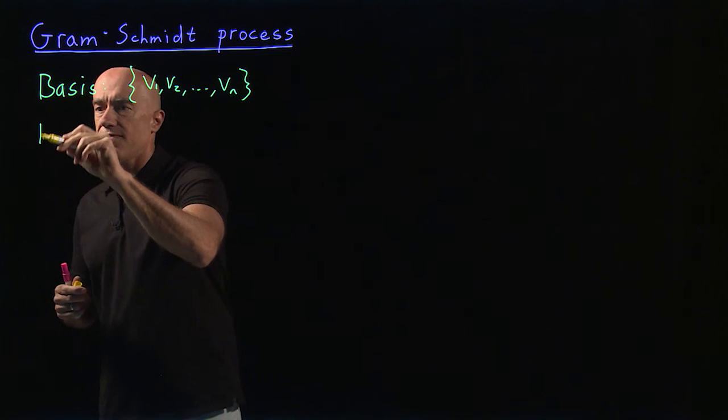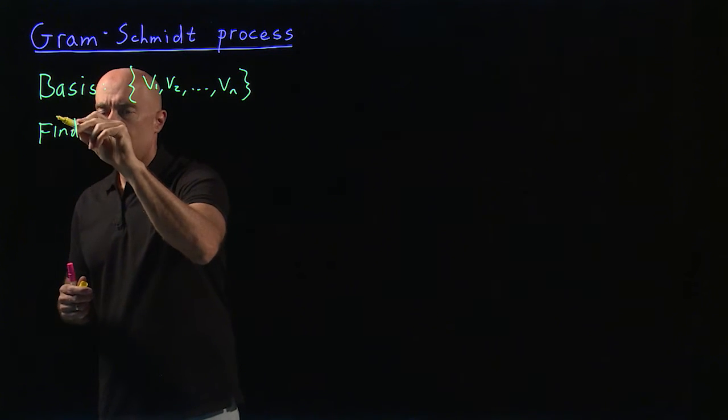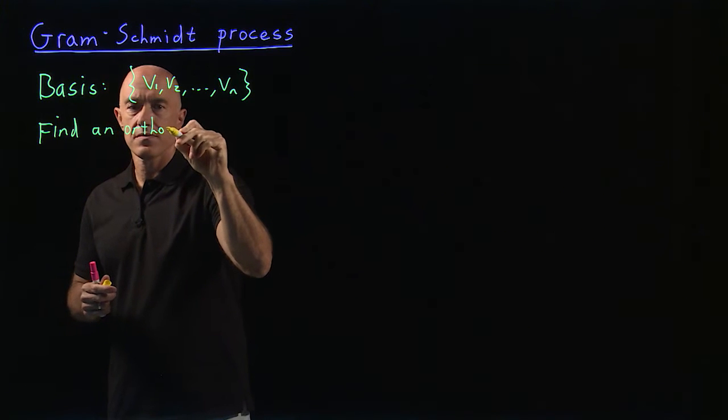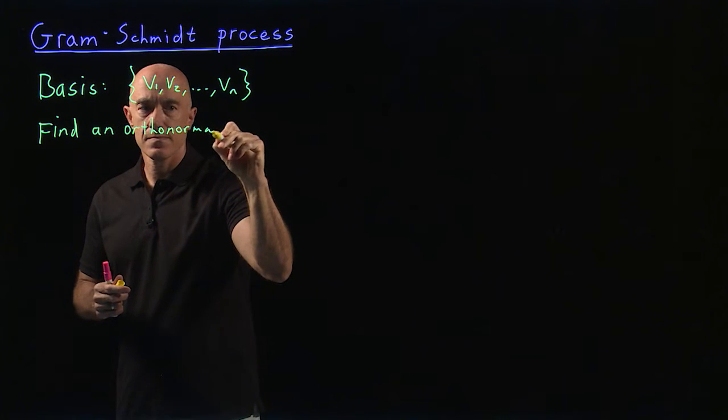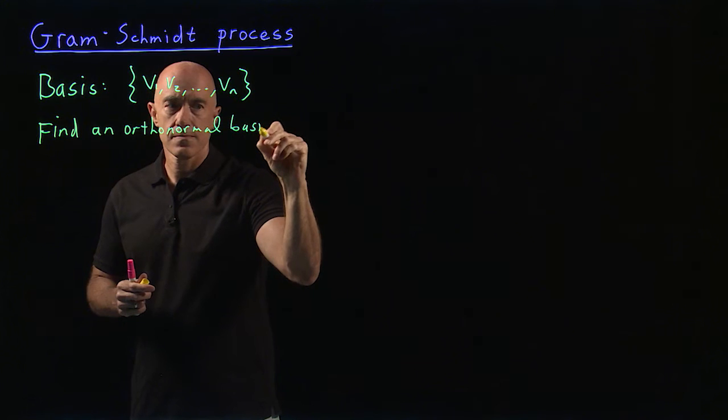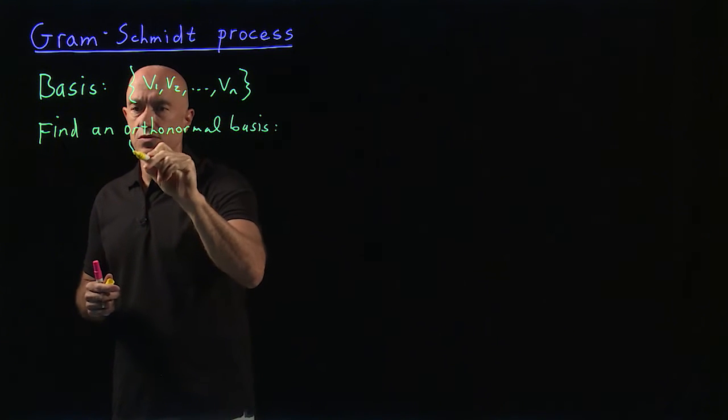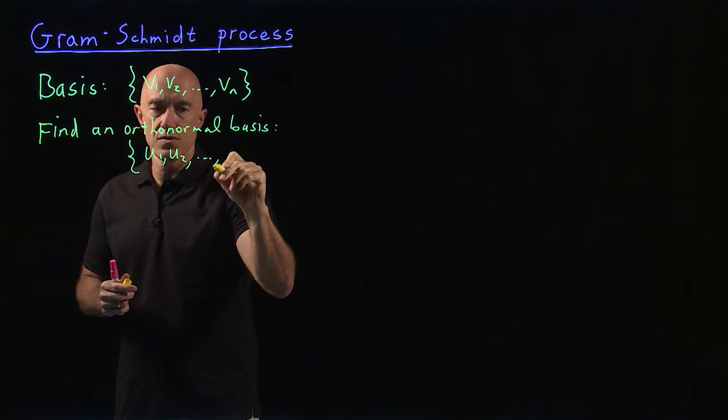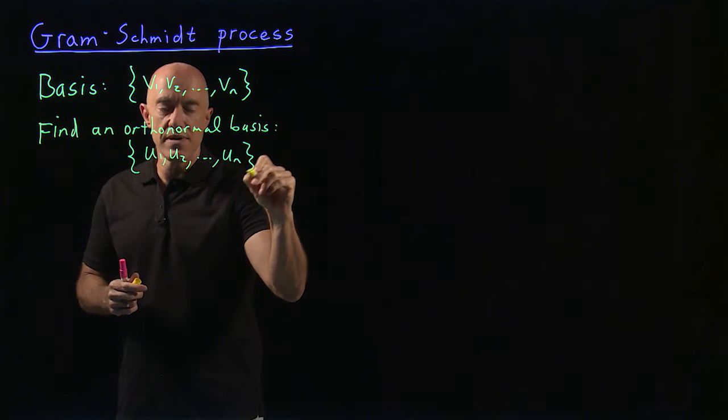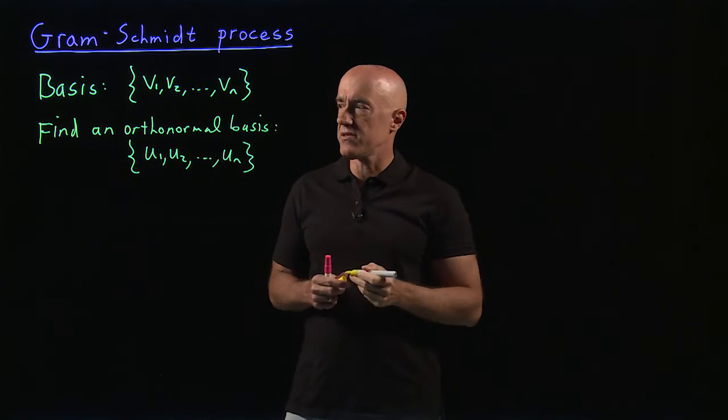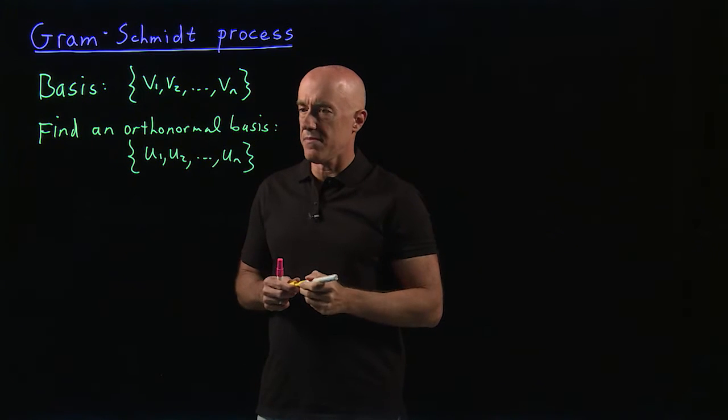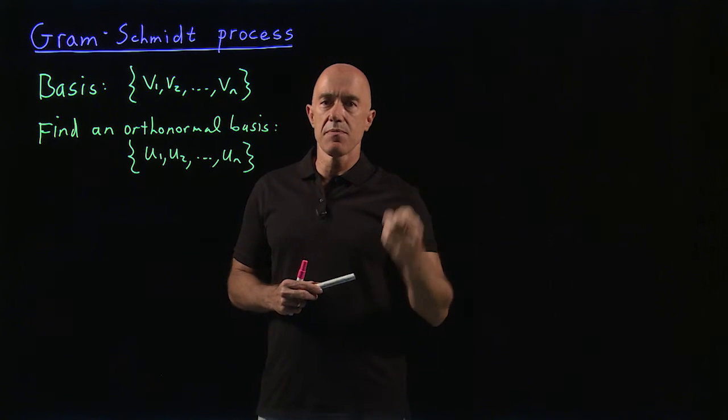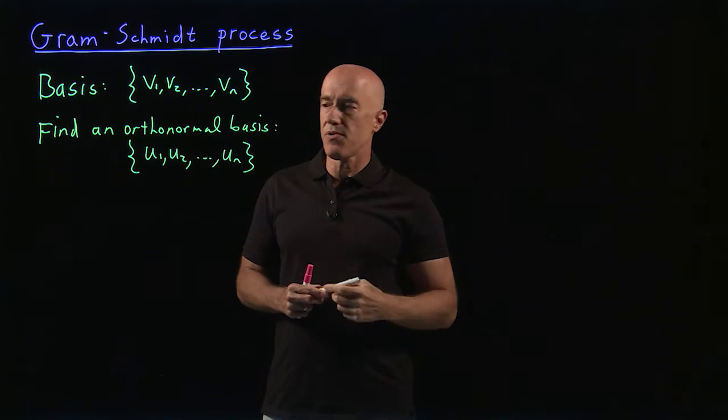We want to find an orthonormal basis, which then I will denote that by u1, u2, through un. And they'll be the same number of basis vectors because it's spanning the same vector space. So how do we do that? I'm going to show you a two-step process.